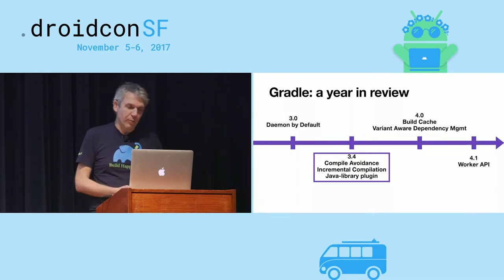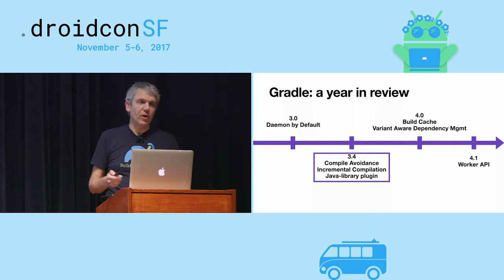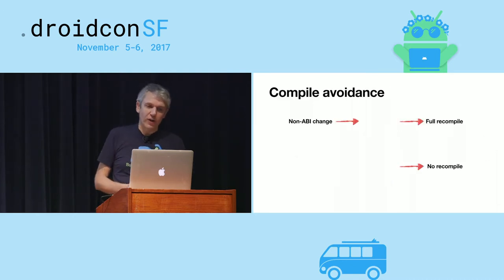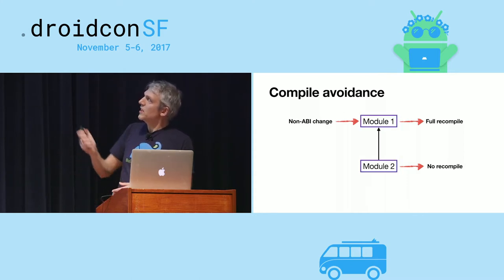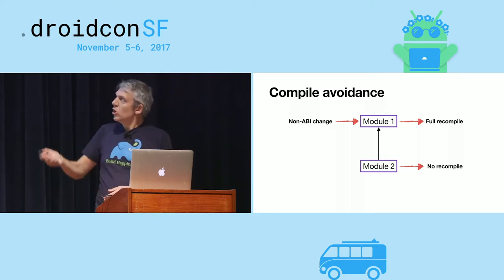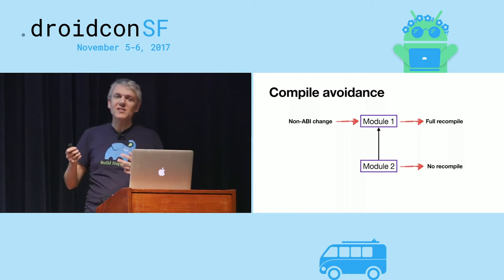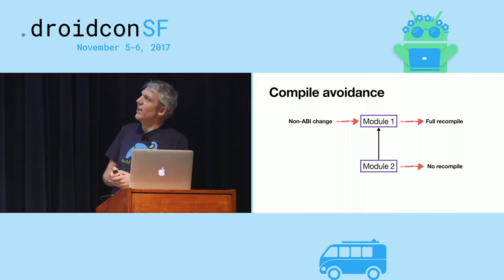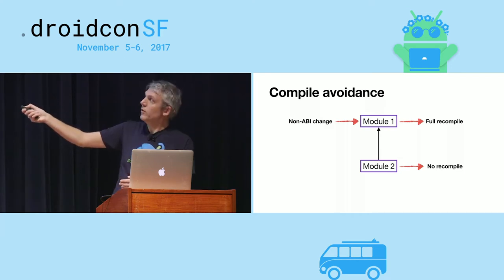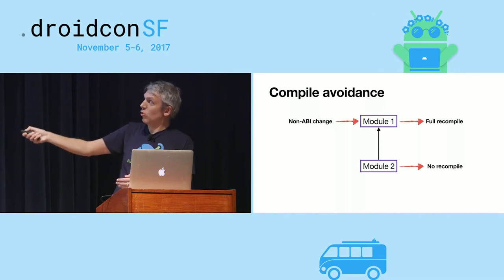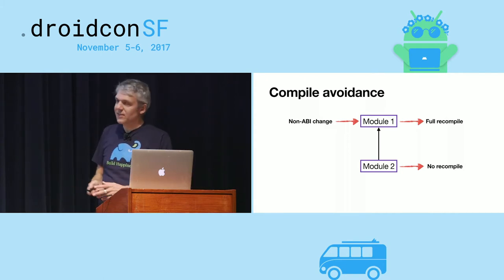The next very important feature — actually a set of features — is compile avoidance, incremental compilation, and the Java library plugin. With compile avoidance, when module two depends on module one and you change the implementation of a method — an ABI change meaning it doesn't change the interface of the module — Gradle still recompiles module one, but detects that this change is not relevant for recompiling module two. So module two is not recompiled. In a larger dependency graph, that is a very effective feature, and it also improves the cache hit rate.